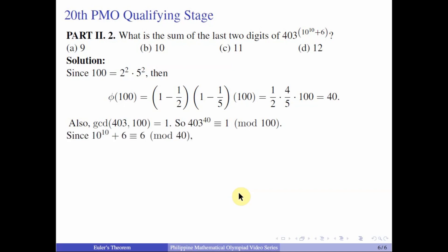And so let us take the remainder of 10 to the 10 plus 6 when divided by 40. We know that 10 to the 10 is divisible by 40. So that means that this expression is congruent to 6 mod 40. And so 403 raised to 10 to the 10 plus 6 is just congruent to 403 raised to 6 mod 100. And then we can change the base. So let us take the remainder when 403 is divided by 100 which is equal to 3. So we have 3 raised to 6 mod 100.